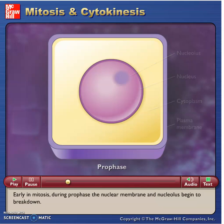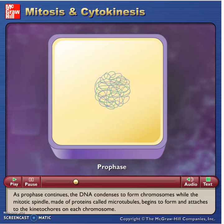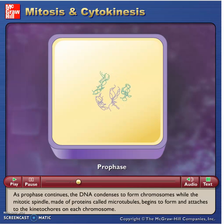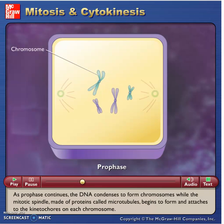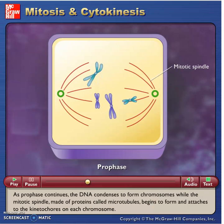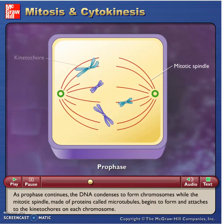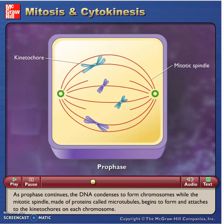Early in mitosis, during prophase, the nuclear membrane and nucleolus begin to break down. As prophase continues, the DNA condenses to form chromosomes while the mitotic spindle, made of proteins called microtubules, begins to form and attaches to the kinetochores on each chromosome.